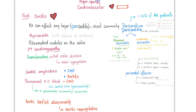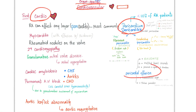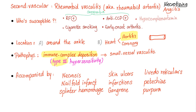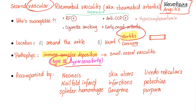Extra-articular manifestations are general and organ-specific. Starting with the cardiovascular system: remember pericarditis and pericardial effusion, CHF, aortitis, and coronary artery disease. For vascular manifestations: remember necrotizing angiitis, aortitis, and type 3 hypersensitivity, which is an immune complex vasculitis.